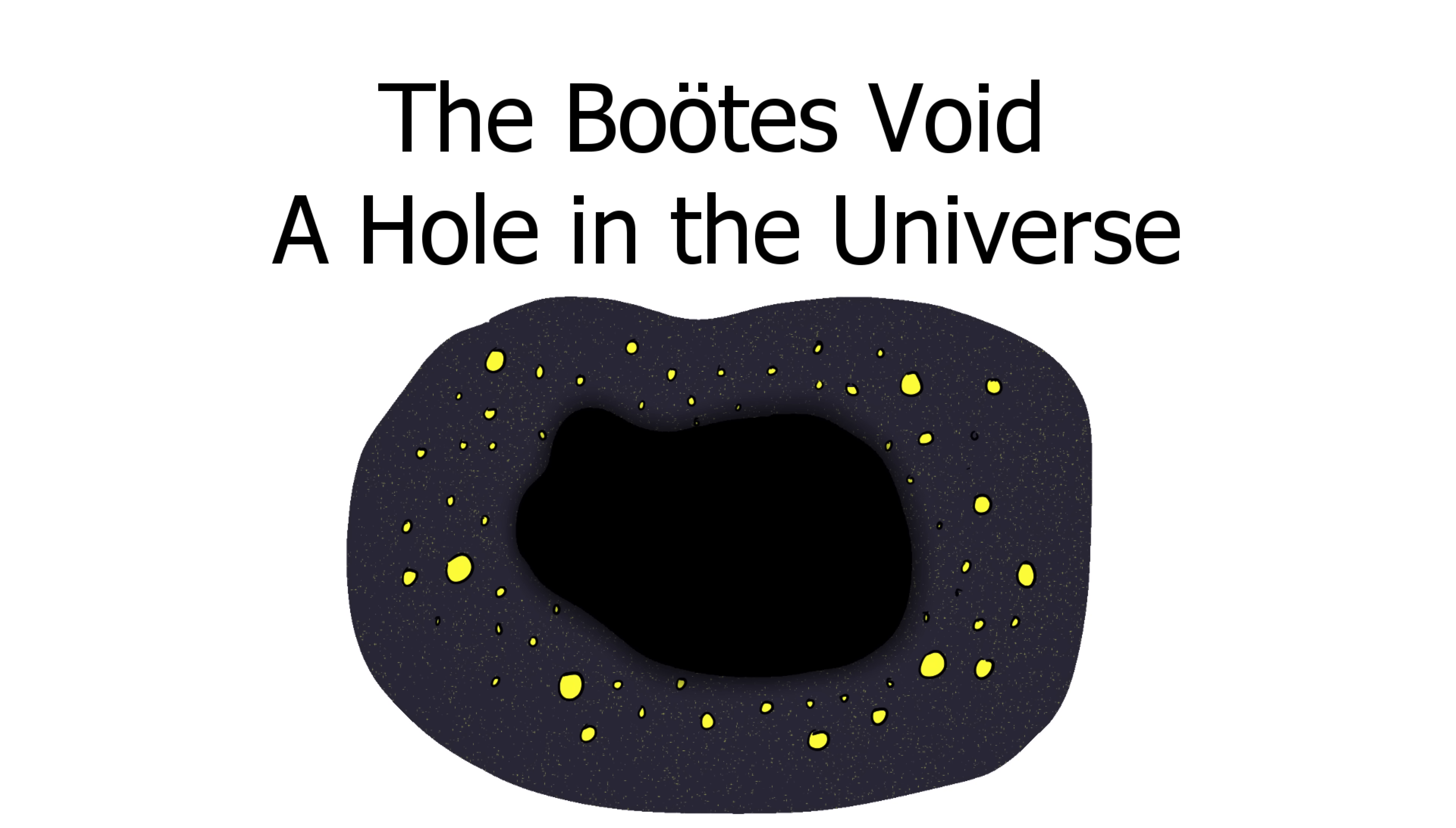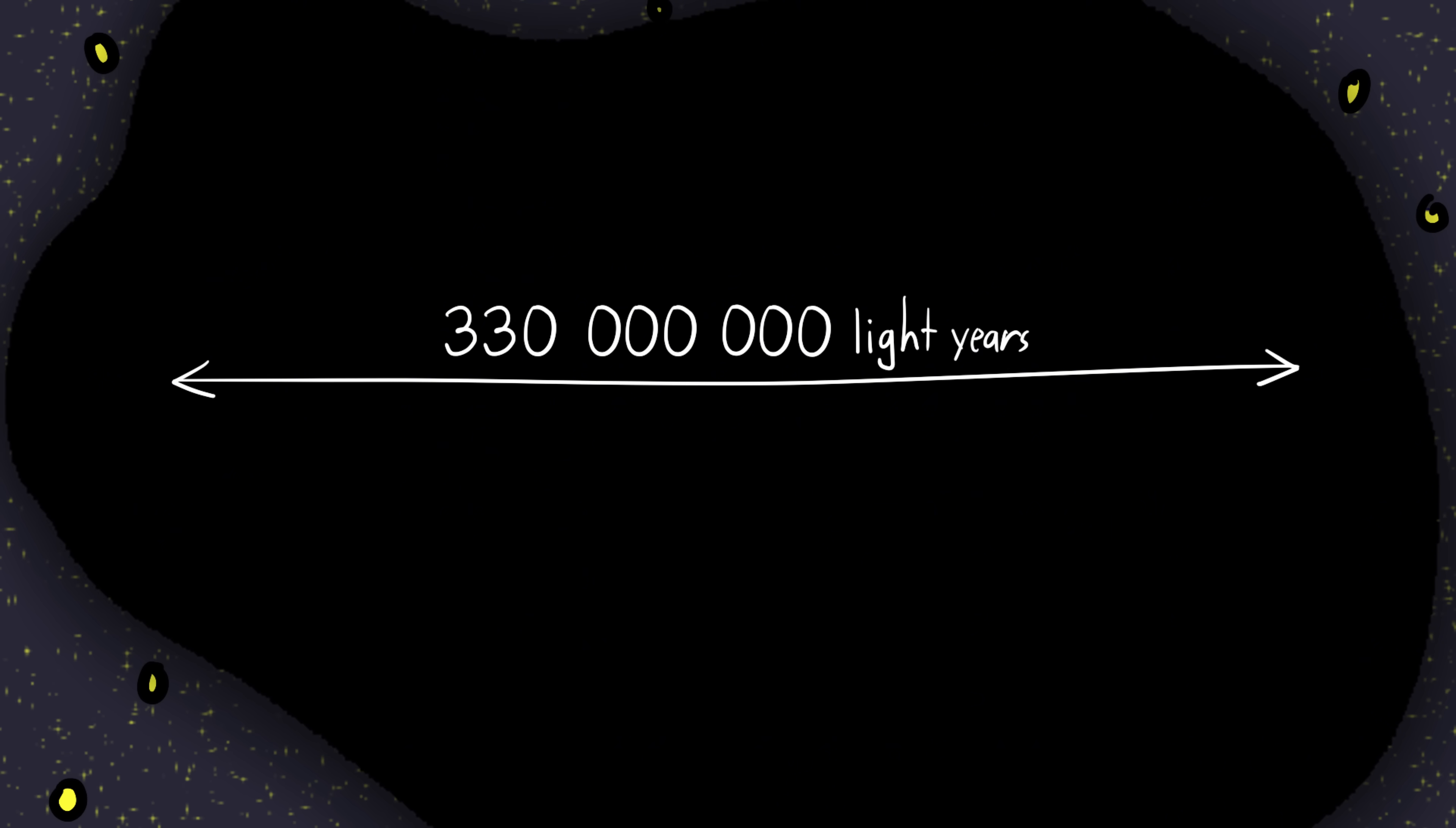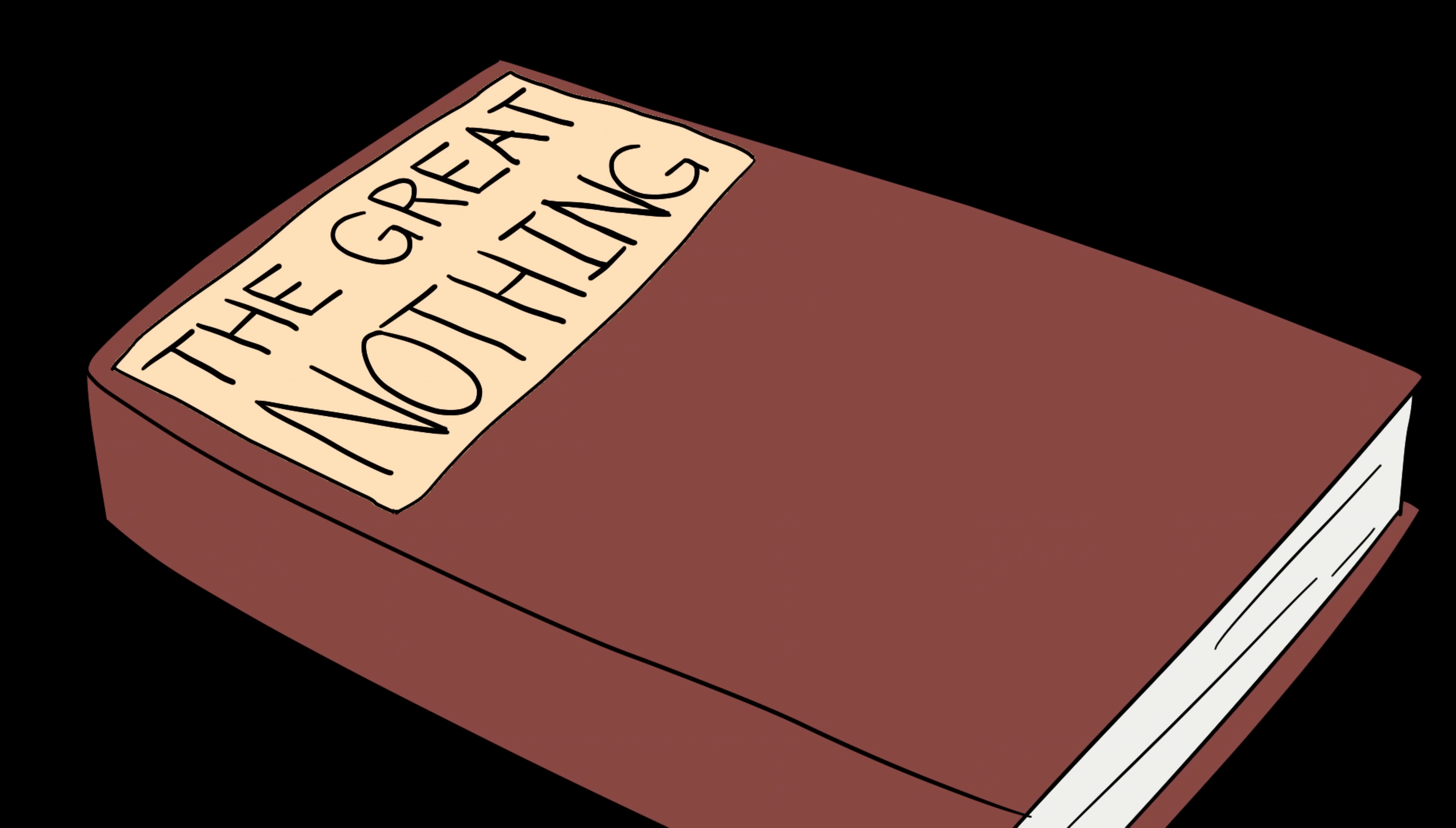Number 6, the Boötes Void, a hole in the universe. If black holes are terrifying because they're invisible, the Boötes Void is terrifying because it's too visible. It's an enormous region of space about 330 million light years across with almost nothing in it. Astronomers call it the Great Nothing, which sounds like something out of a horror novel.